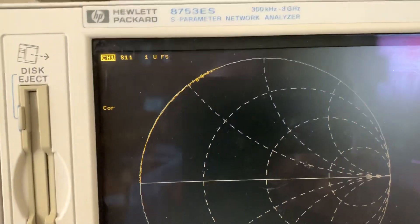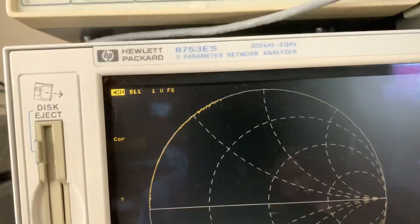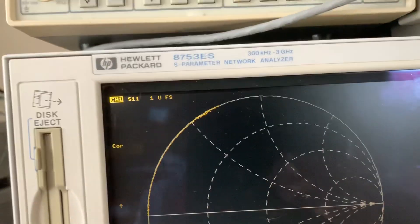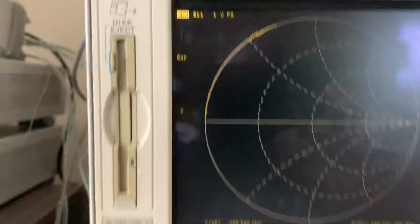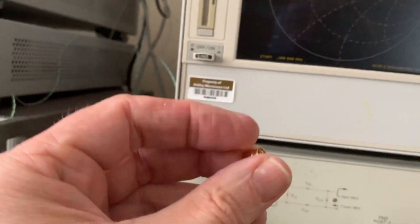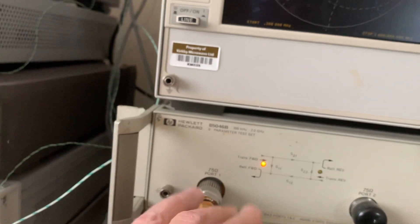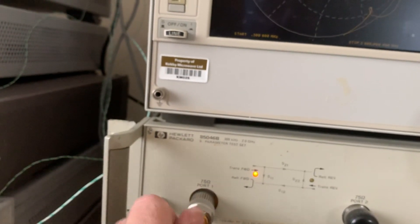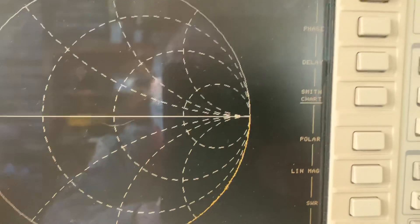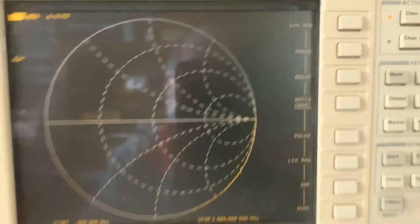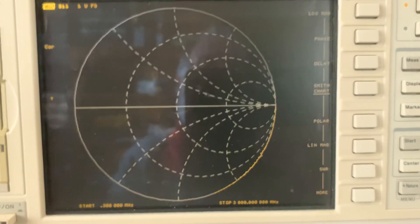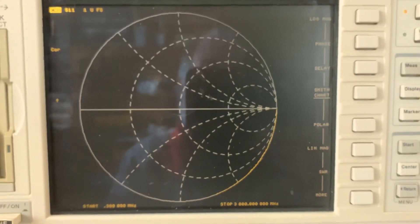Even though we've got an open, it looks like a perfect short. Now if we take the short, since when we calibrated we said it was an open, it will behave like an open.